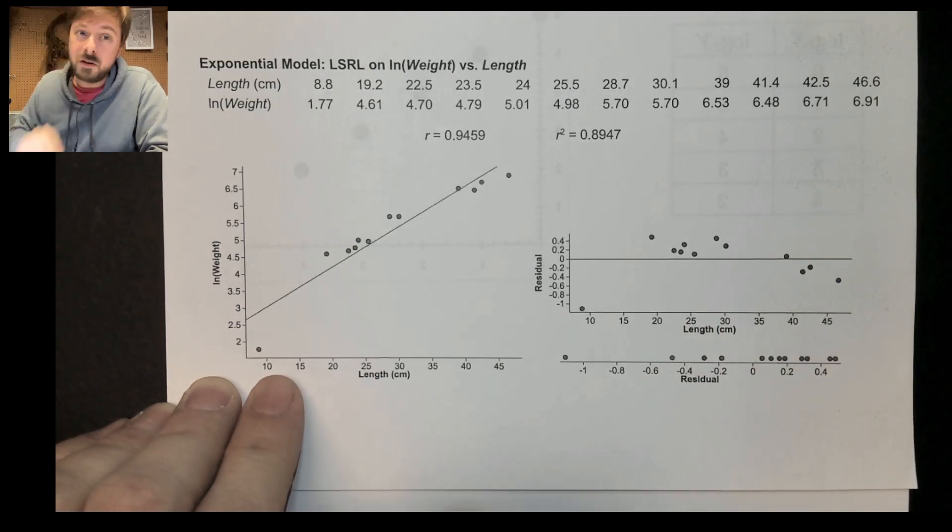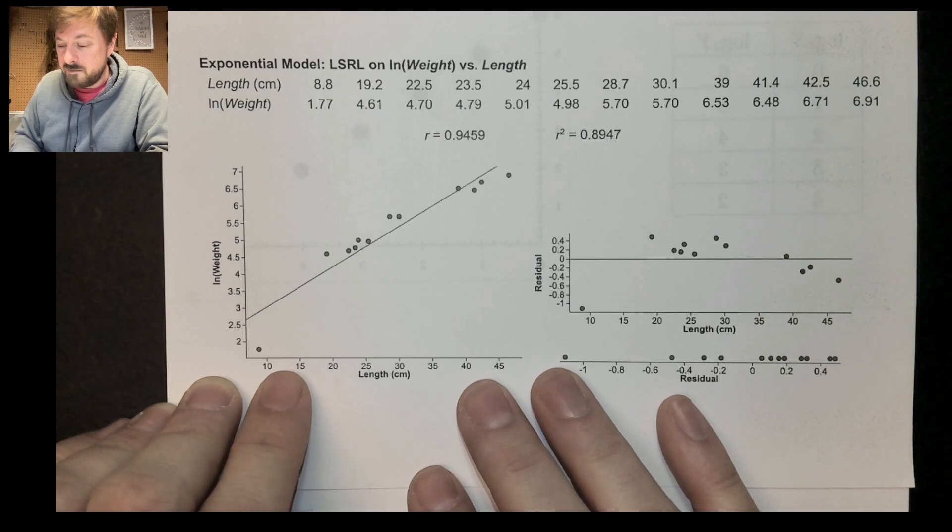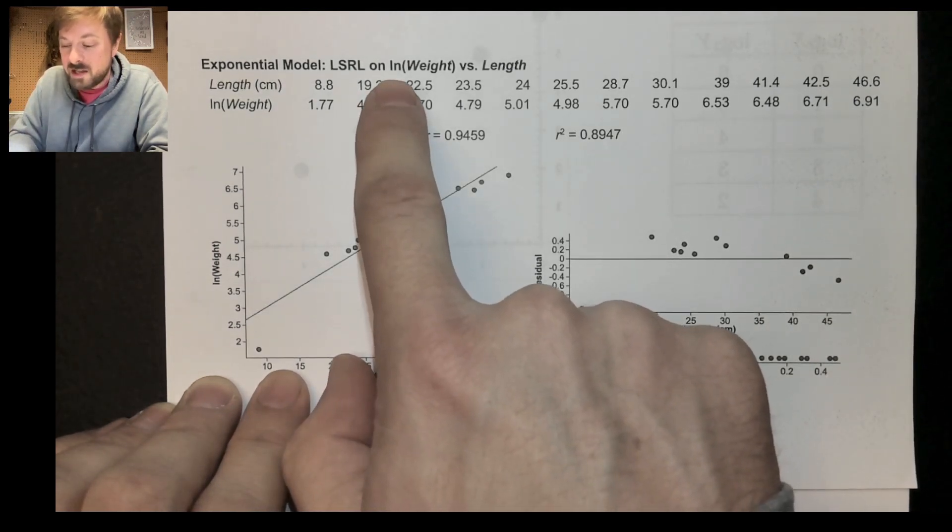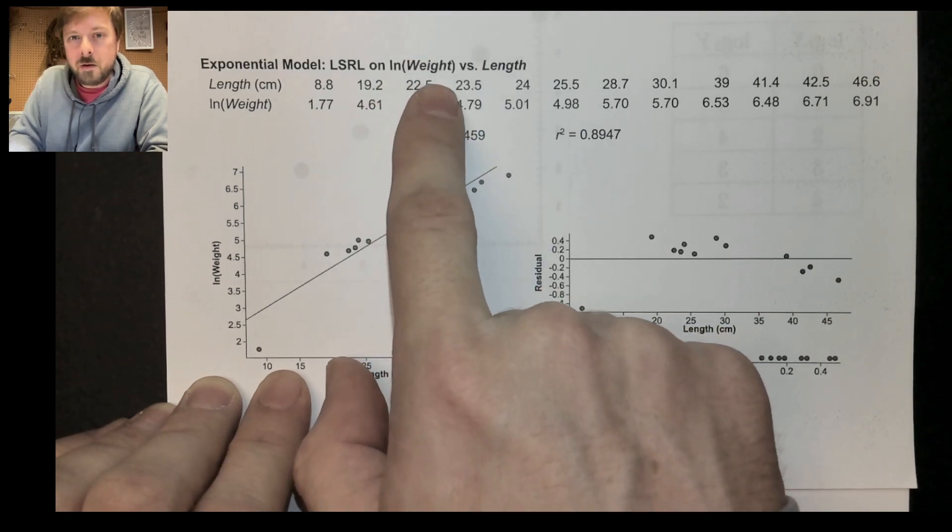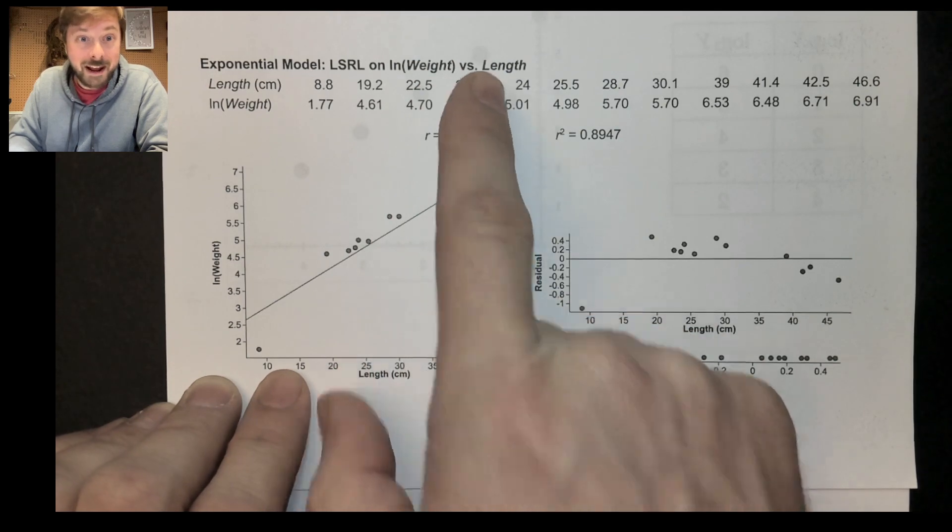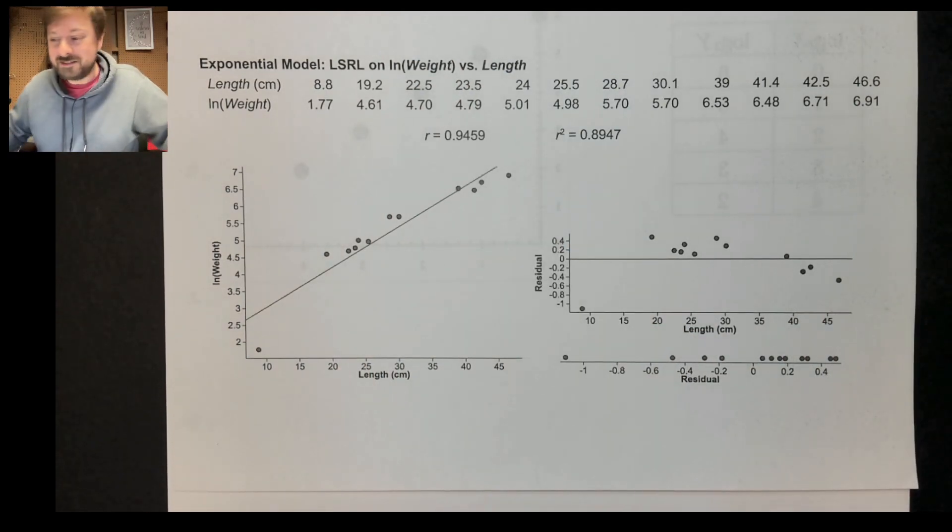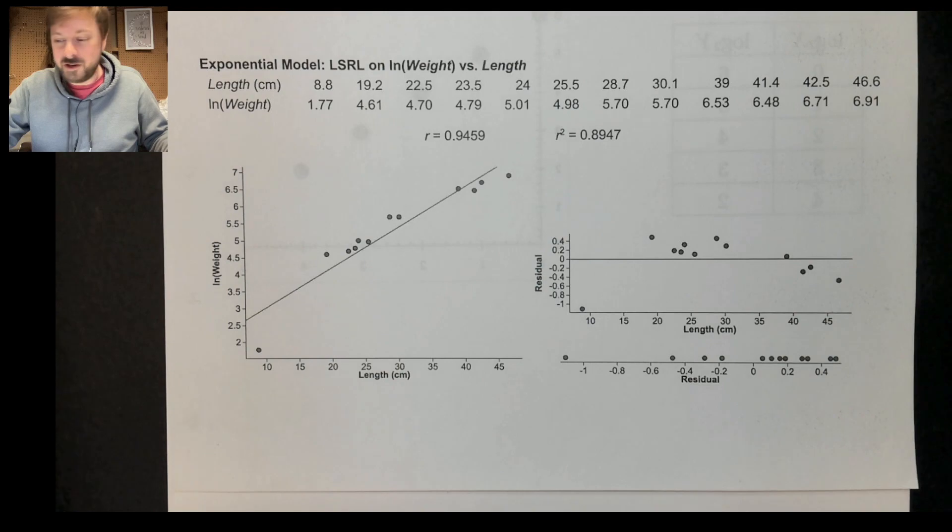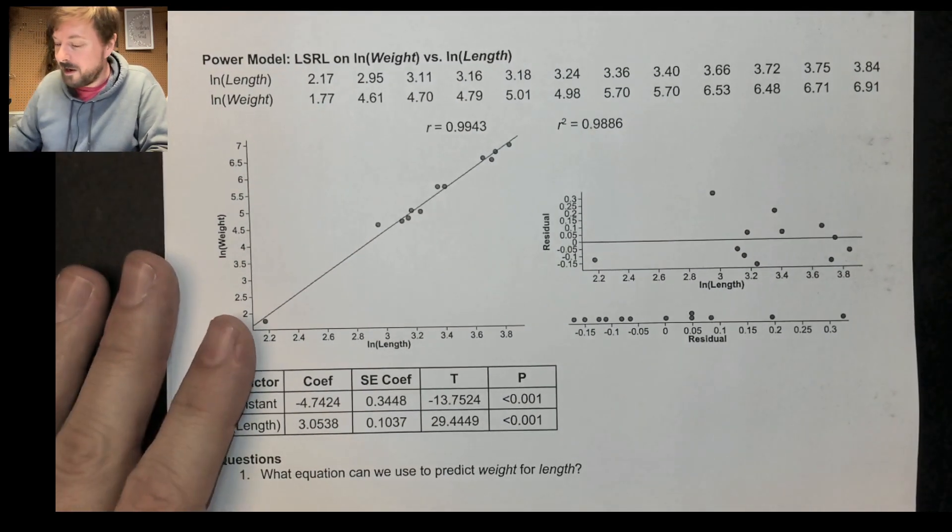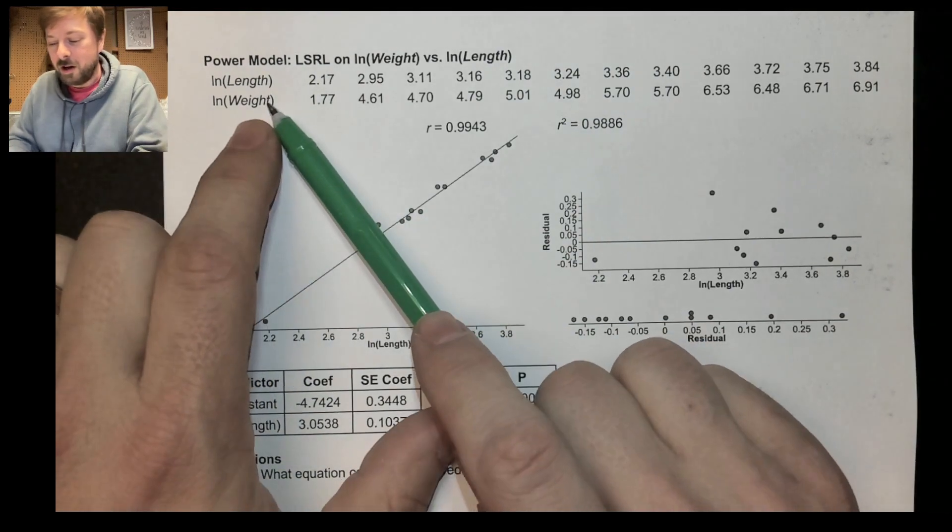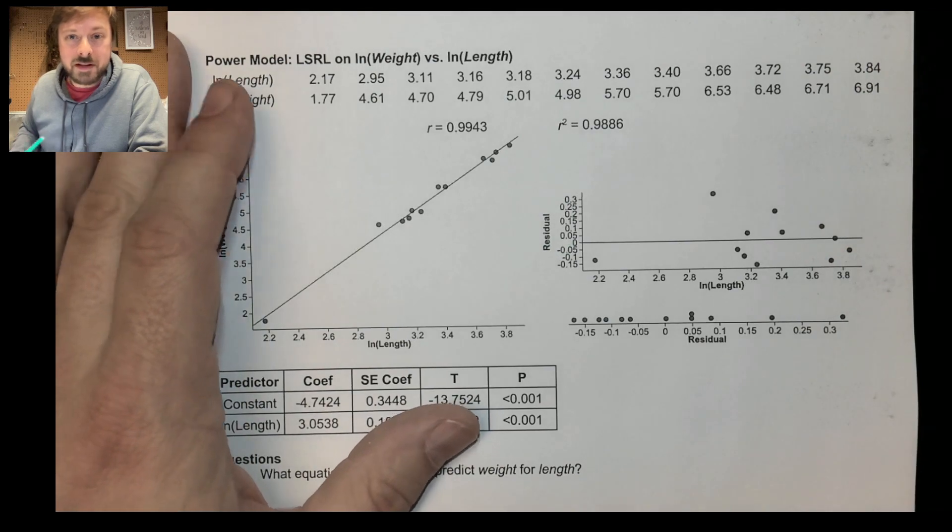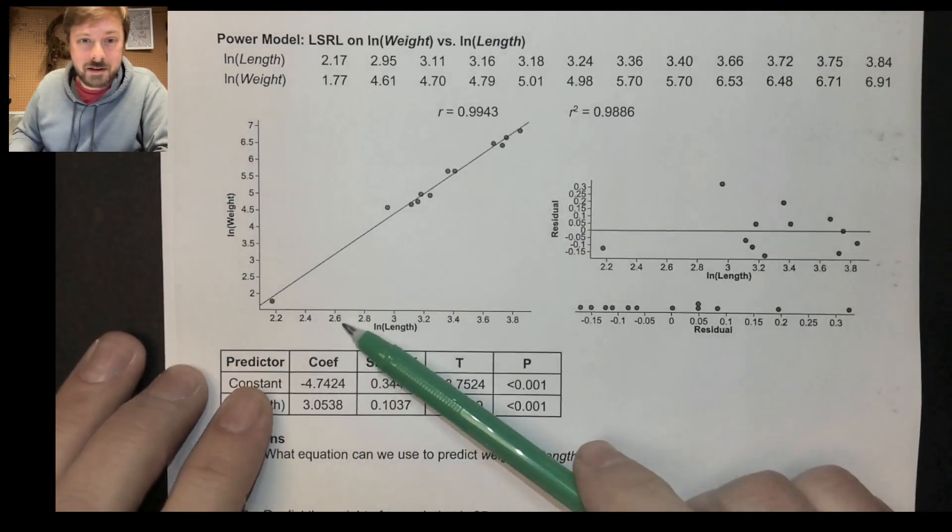So what else could we do? Well, maybe, and we love taking logs, don't we? Maybe instead of just doing natural log of the weight, why don't I also do natural log of the length and just see what happens? Presto. Change-o. Ha-ha. Well, check this out. Now I took the natural log of the length, the x, and the natural log of the y. And what happens here? Well, check this out. Here, that looks kind of straight.